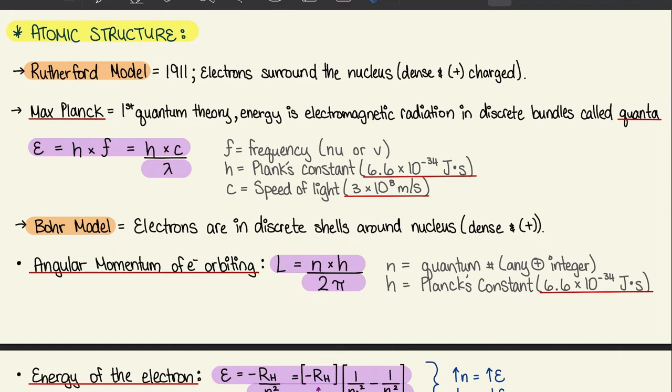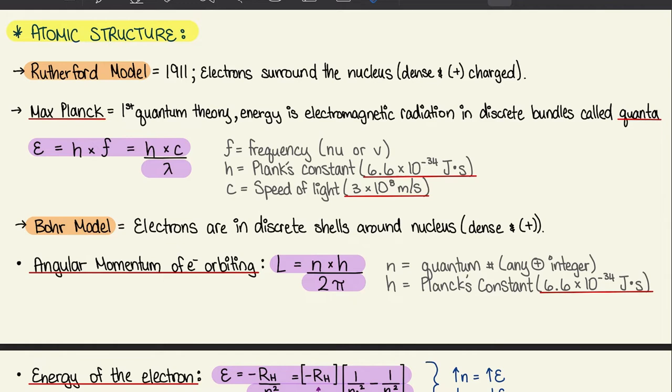We're going to move on to the Bohr model, which shows that electrons are in discrete shells around the nucleus — and once again, the nucleus is represented as dense and positively charged. From this model we have an equation for the angular momentum of electrons orbiting, represented as L. L equals N times H over 2π, where N is the quantum number (any positive integer) and H is Planck's constant, 6.6 times 10 to the negative 34 joule-seconds.